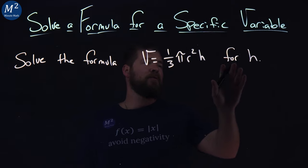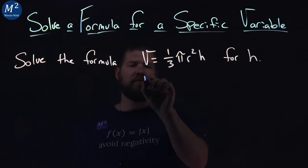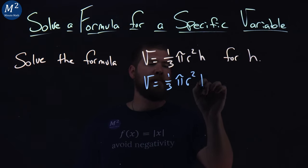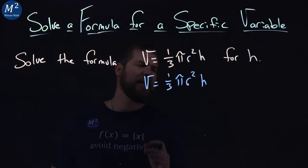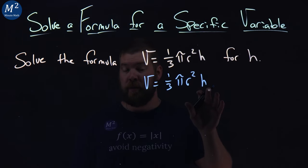Now, what we want to do when we solve for h is get h by itself. So we have our formula, let's rewrite it here: v = ⅓πr²h. Well, to get h by itself, we just have to bring everything over to the other side and leave h here.